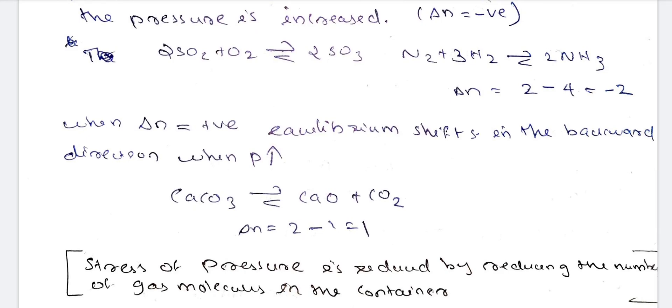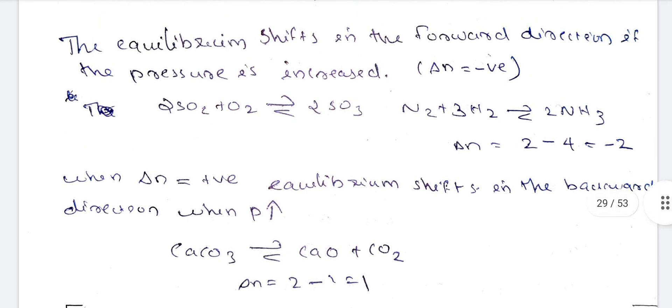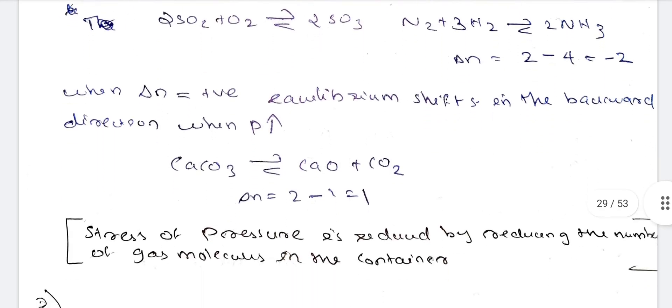In another example, N2 plus 3H2 gives 2NH3. The product moles minus reactant moles: products are 2 moles of NH3, reactants are 1 mole N2 plus 3 moles H2, giving 4 moles. So delta N equals 2 minus 4, which is negative. When delta N is negative, equilibrium shifts in the forward direction and more product is formed.